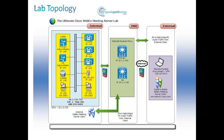This lab topology represents the system configuration for this lab. Notice the topology is broken up into three sections: internal, DMZ, and external. The Cisco Unified Communications Manager, Presence Server, Unity Connect, and Active Directory are all completely installed and configured before this video was recorded. Please stop the video to take time to familiarize yourself with this topology and restart the video when you are ready.